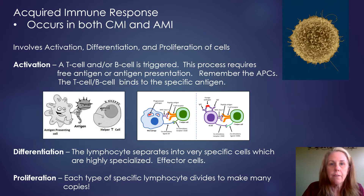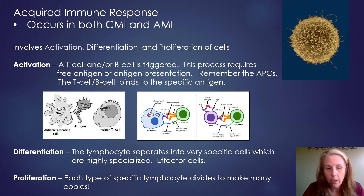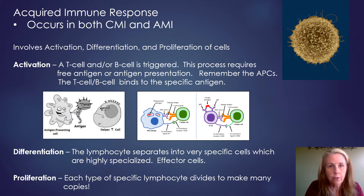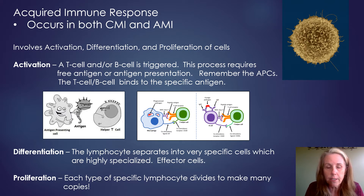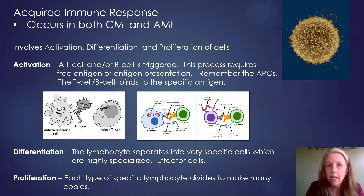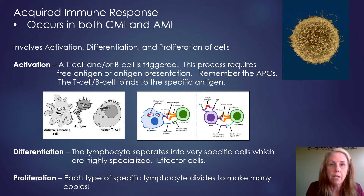After differentiation, those cells experience proliferation. To proliferate means to make more. Once they differentiate into their separate types of cells, they start dividing very quickly — they proliferate. Each specific type of lymphocyte is going to start dividing and we're going to have many copies of them, kind of like making a little army of those immune cells ready to fight that infection.